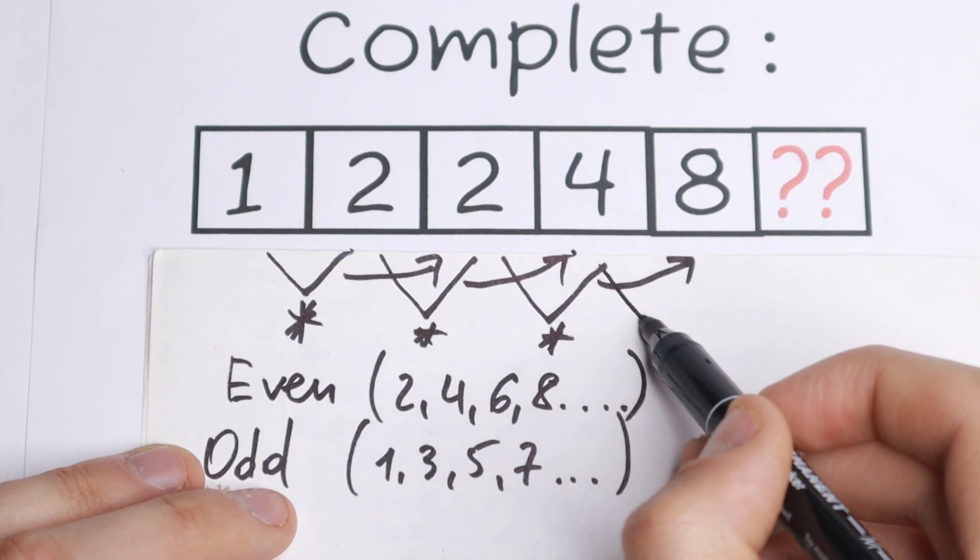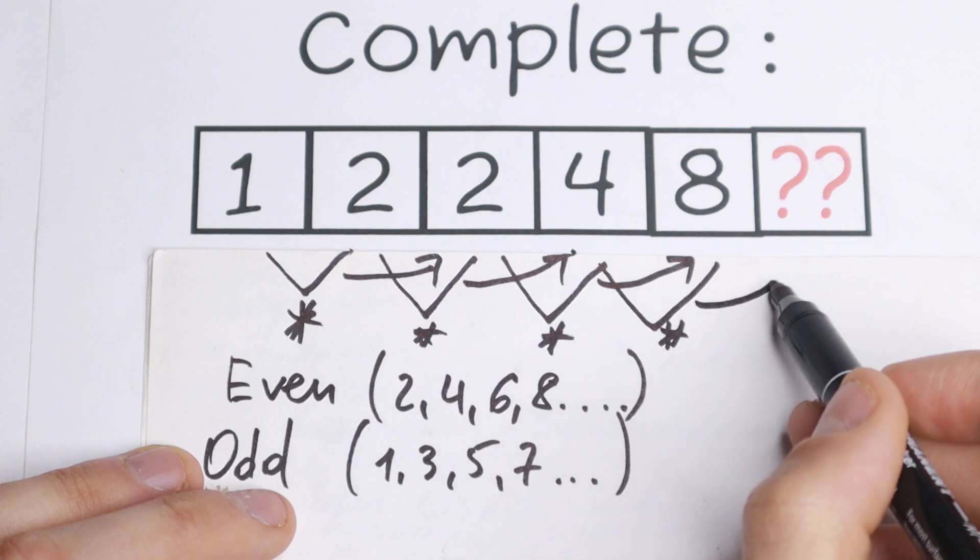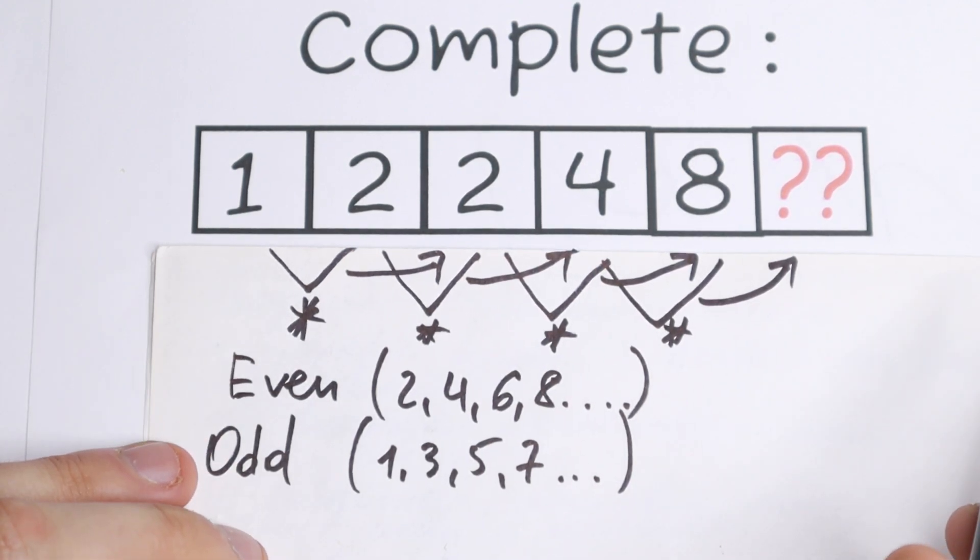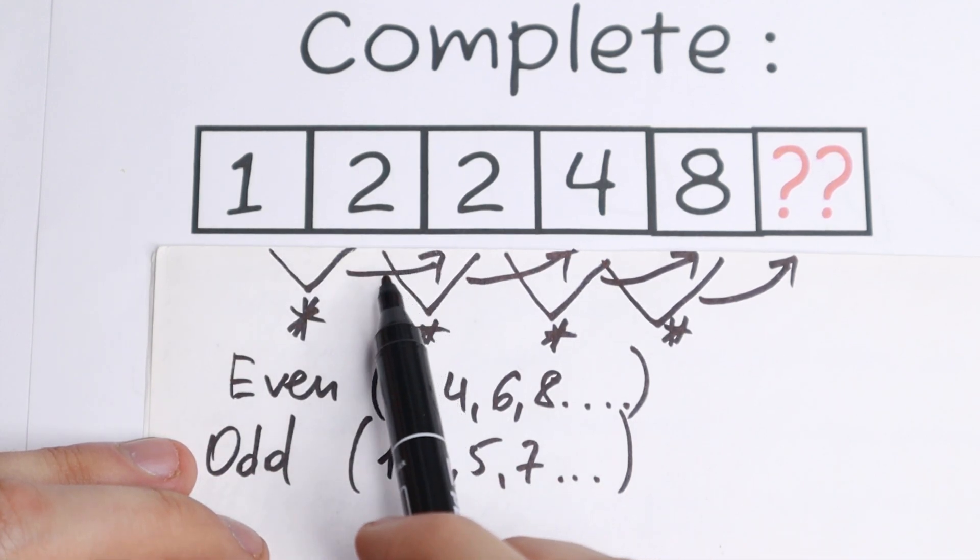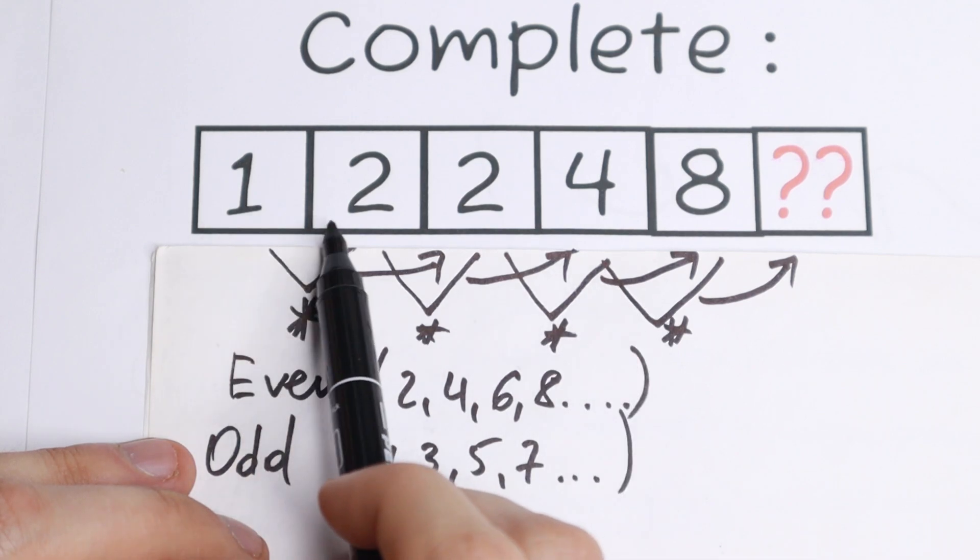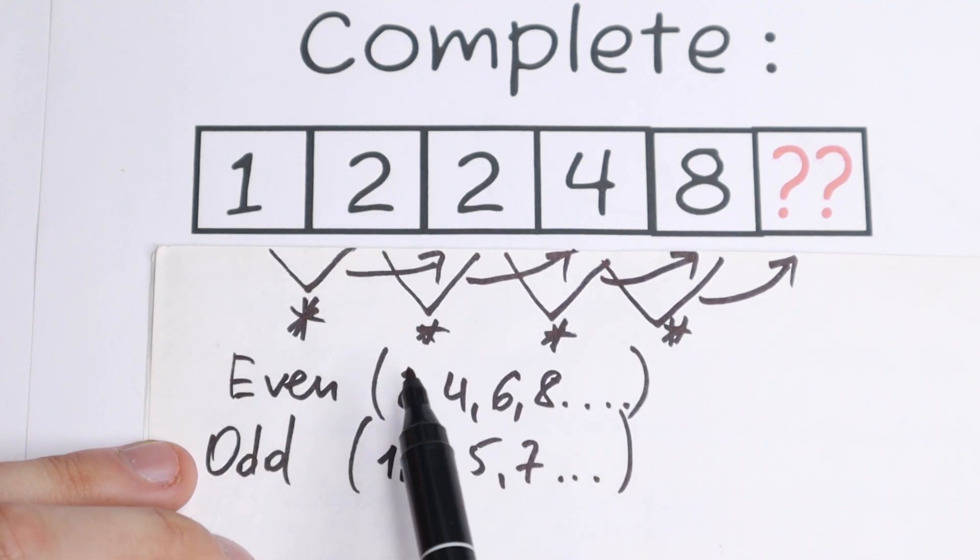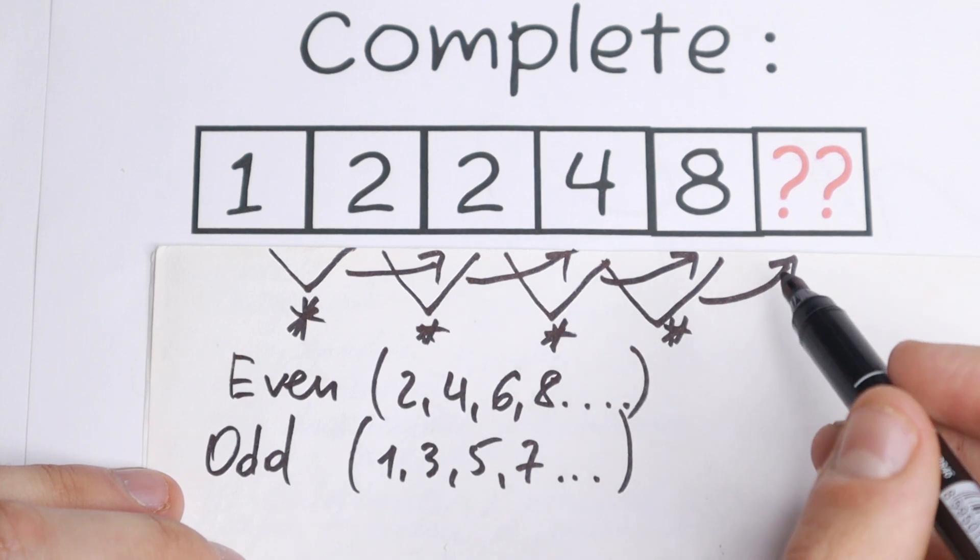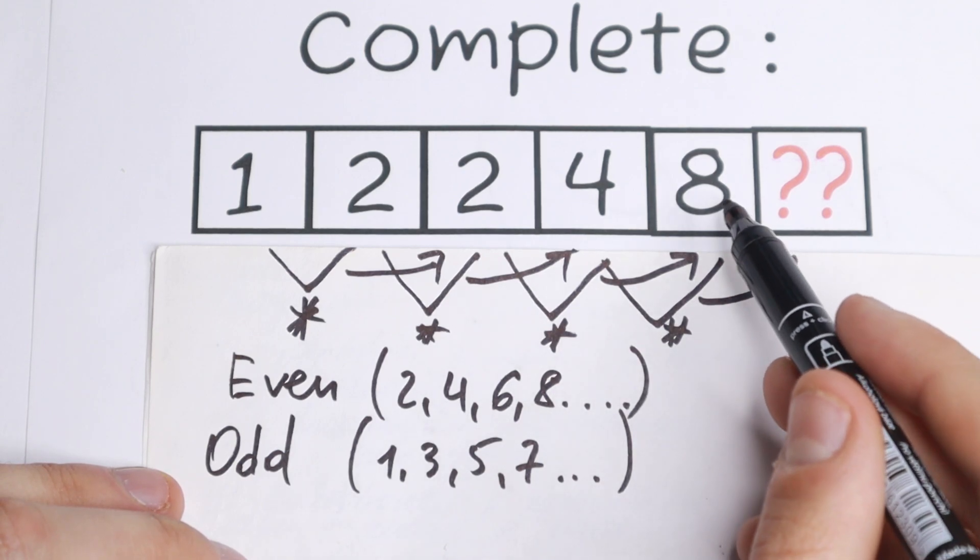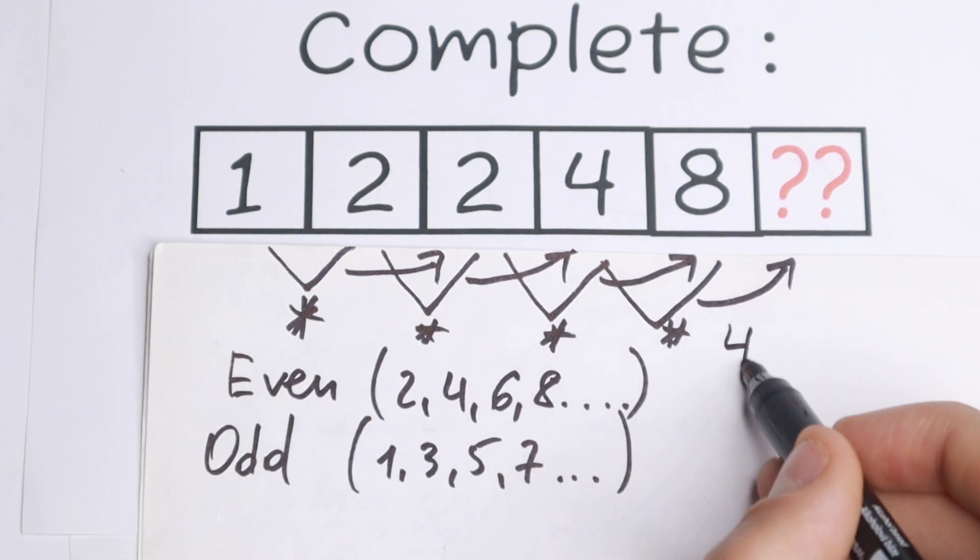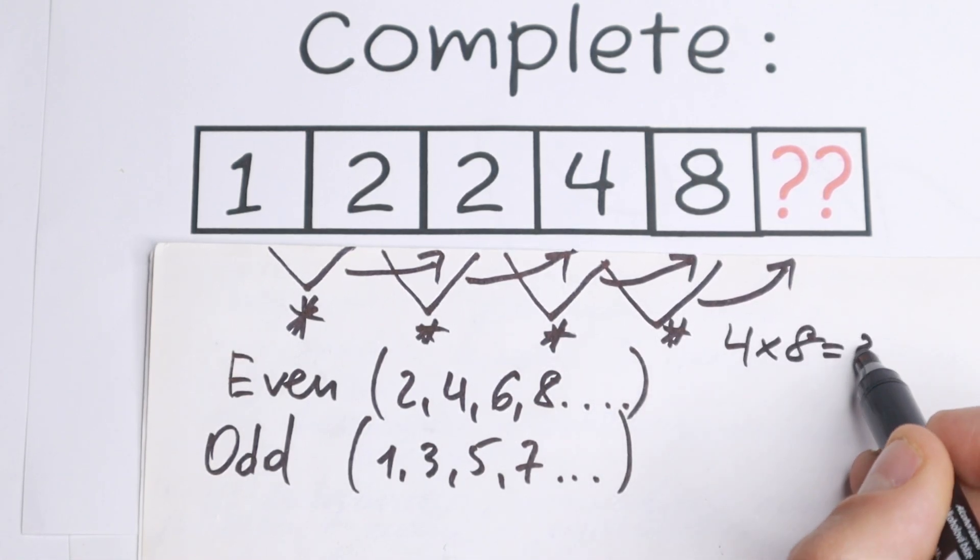So if we multiply these two, we will have our answer. The pattern is: multiplying the first and second, we get the third. Multiplying the second and third, we get the next one. 1 times 2 equals 2. 2 times 2 equals 4. 2 times 4 equals 8. So if we multiply 4 times 8, we will have 32.